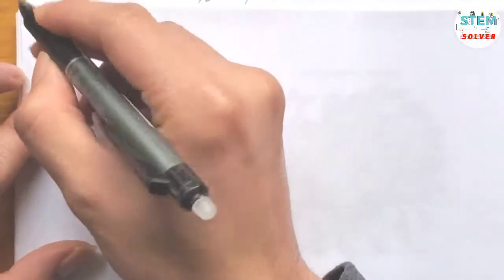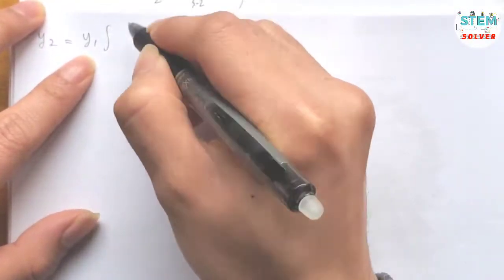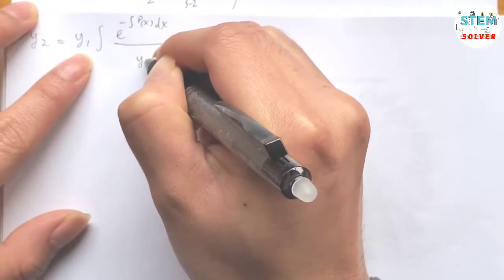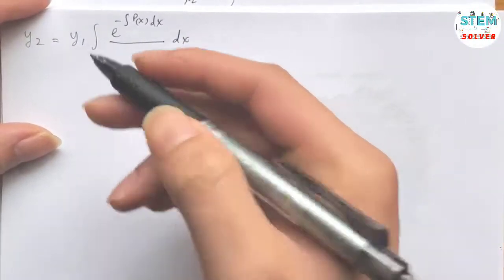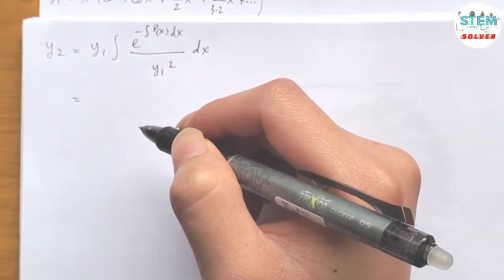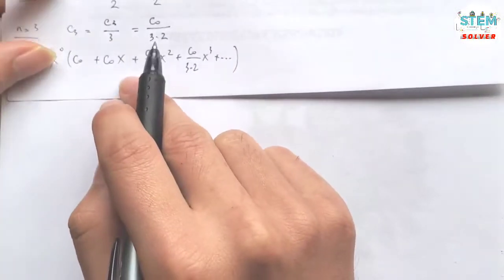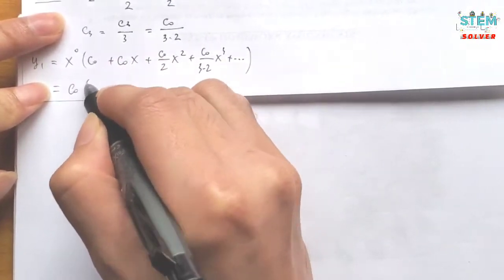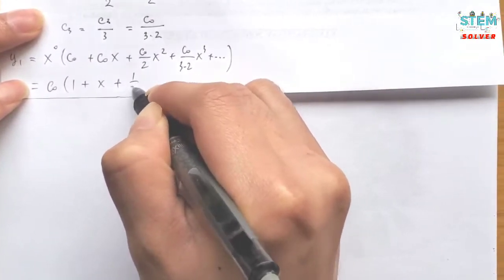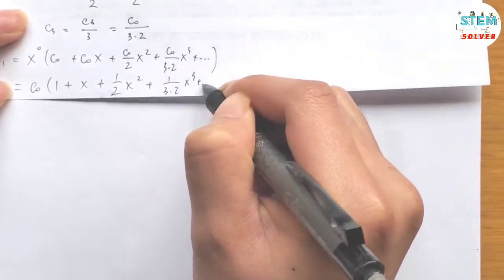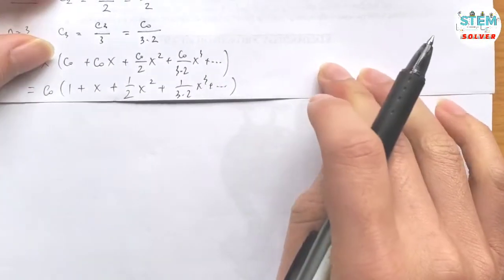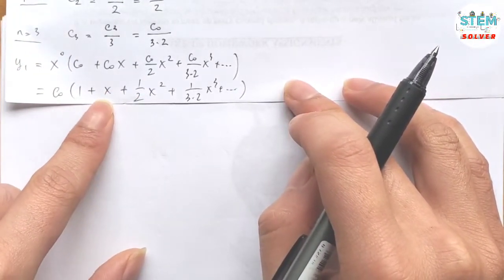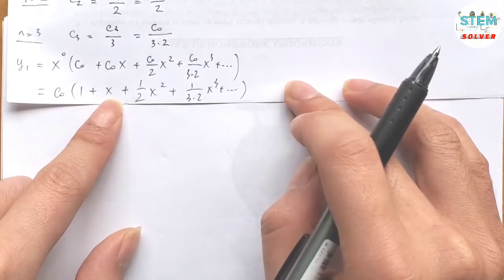What is y_1? It's what we just found. Factoring out c_0, we have 1 plus x plus one-half x squared plus 1 over 3·2 · x cubed plus dot dot dot. If you notice, this is the power series for e to the x, so we can rewrite this as c_0 times the power series from 0 to infinity of 1 over n factorial times x to the n, which is c_0 · e to the x.